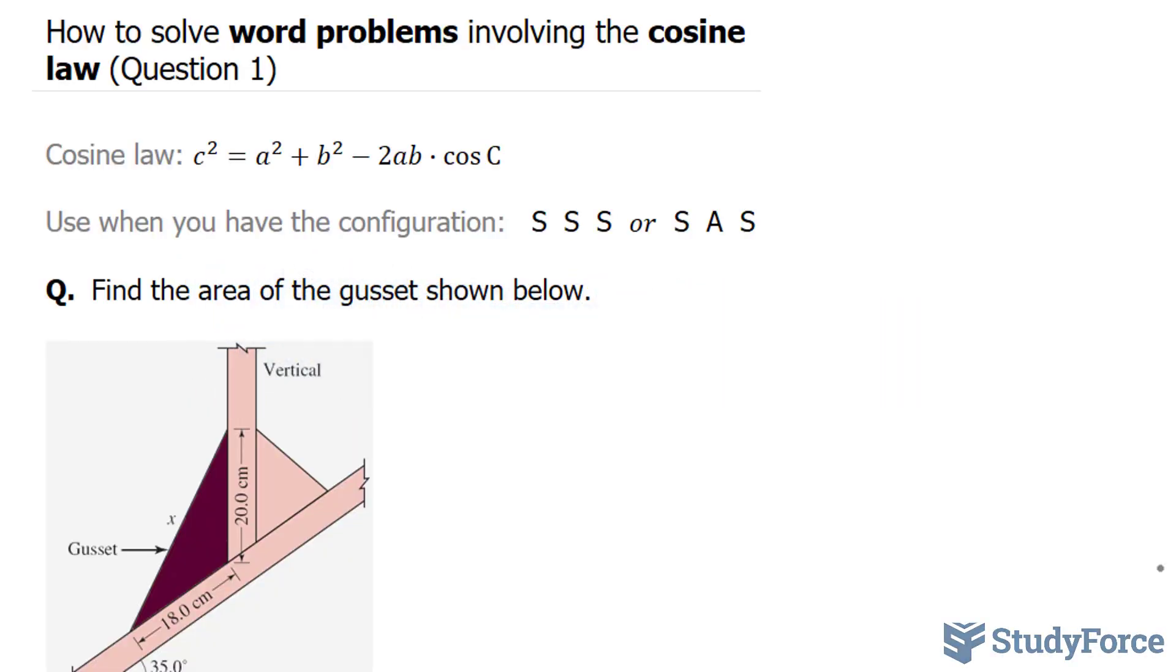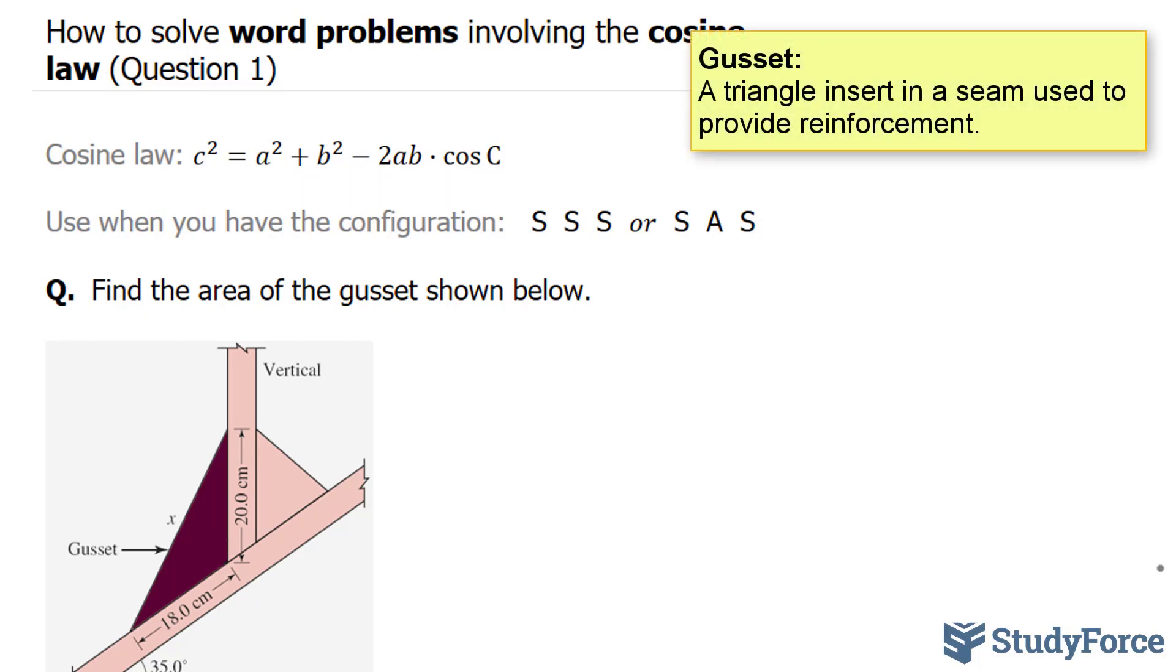In this video, I'll show you how to solve word problems involving the cosine law. Just a reminder, the cosine law is stated right here. And the question asks, find the area of the gusset shown below.